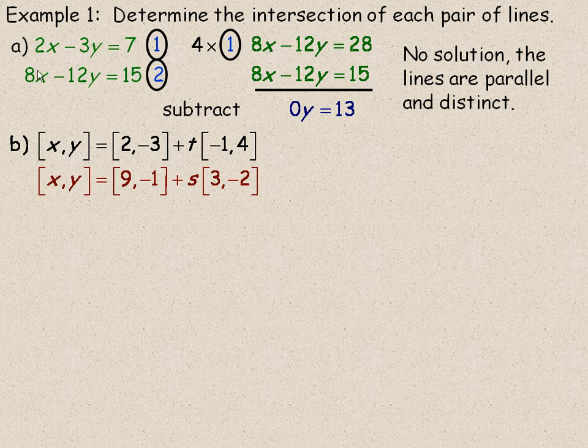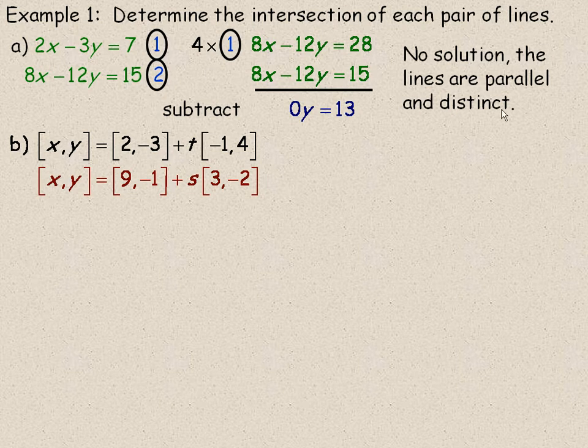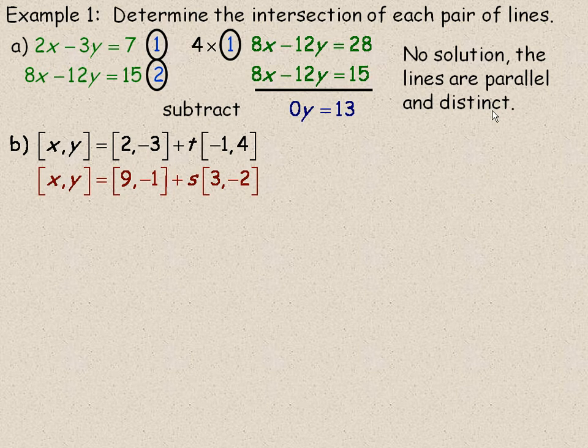So for example, since I am multiplying by 4, if this number here had been 28, then they would have been the same line, not just parallel and distinct. Distinct means that they are not the same line, they are parallel and different lines.